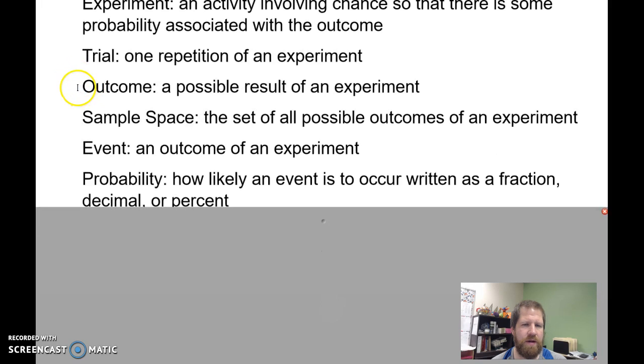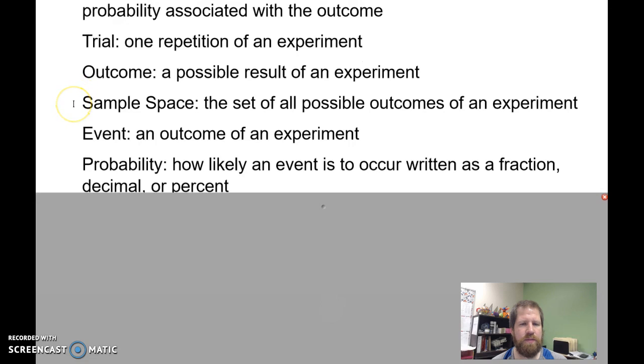An outcome is one possible result of an experiment. The sample space is the set of all possible outcomes. So it's not only what I roll, but it's every single thing that could happen when I roll the die.